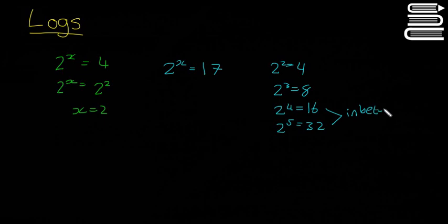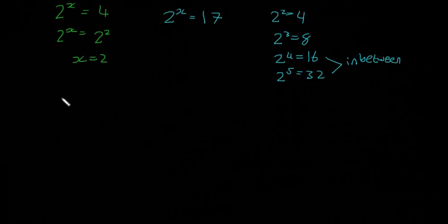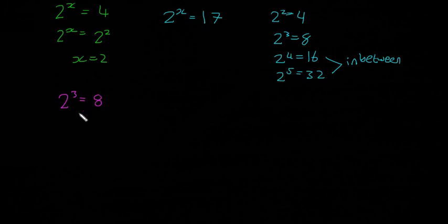So how do we find it? You can either try with trial and error, try 4.1 then 4.2 and keep going until you find 17, but it will take you a long time. So the quicker way is with logs. I'll use a different example to show exactly what logs are. If we have 2 cubed is equal to 8, that's one way of writing it.